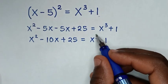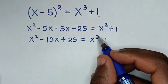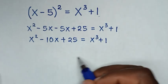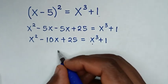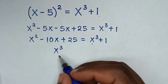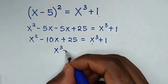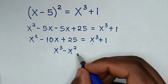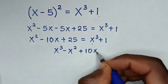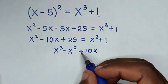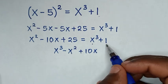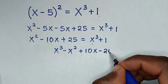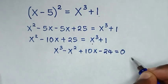Now x³ is the largest power, so we take it to this side. It will be x³, then we take x² to this side to be minus x², and we take 10x to this side to be plus 10x. Then we take 25 to this side: 1 minus 25 is minus 24, equal to 0.